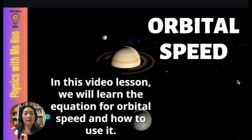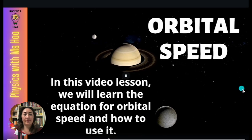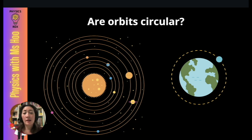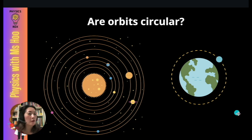First things first, we need to understand about orbits. Are orbits circular? In most diagrams that you would have seen about any orbits — whether they're the planets orbiting the Sun or the Moon orbiting the Earth — these orbits are typically drawn as circular orbits. The truth is, the orbits are not circular.